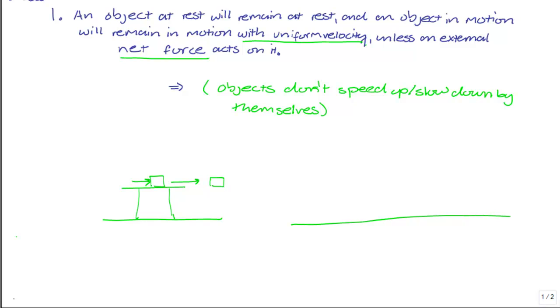Similarly, if you're on a smooth surface like ice skating or on a skateboard, and you're moving with a constant velocity v, if no external force acts on you, no drag or resistive force to slow you down, then you will continue moving with that velocity v. That's Newton's first law. Objects don't speed up or slow down by themselves. They travel with uniform constant velocity unless an external force acts on them.